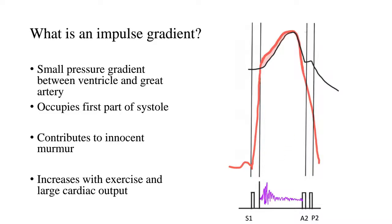If this is a left ventricular pressure tracing — the red tracing — and if the black is the aortic pressure tracing, then you see a small gradient between these two tracings which occurs in the first part of the systole. This contributes sometimes to innocent murmurs, which is to say that whenever there is an increase in exercise or a larger cardiac output across the aortic valve, this impulse gradient increases. The same can occur across the pulmonary artery.